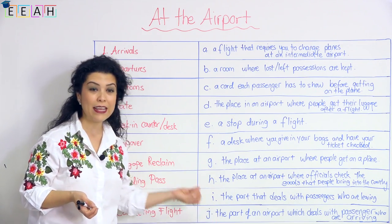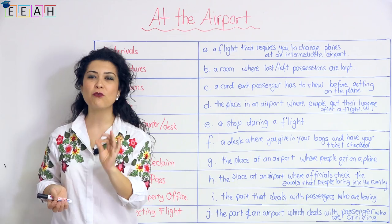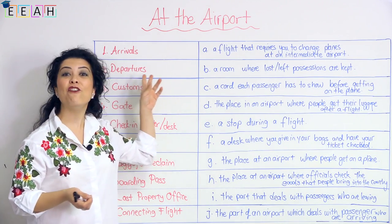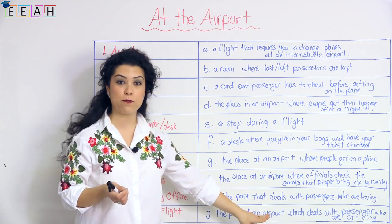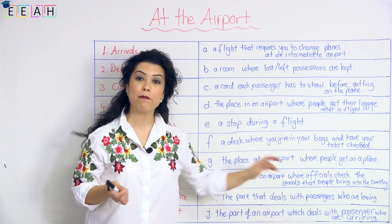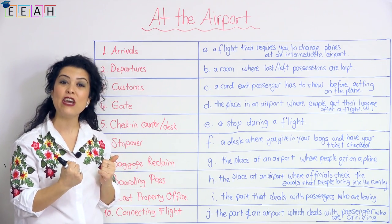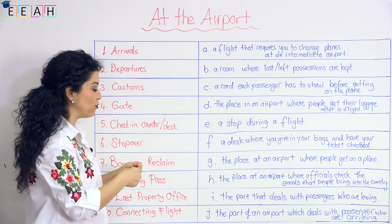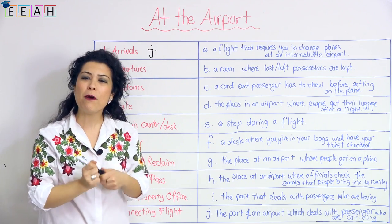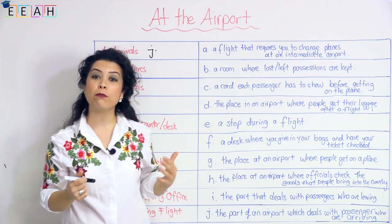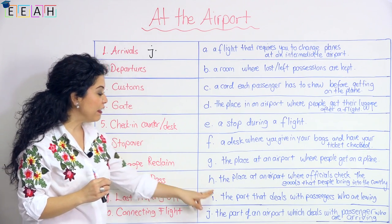I have the words here and their definitions as well. Let's match the words with their definitions. The first word we're looking at is 'arrivals.' Arrivals is the part of an airport which deals with passengers who are arriving — those who are coming into the city or the country. Arrivals matches with Jenny.